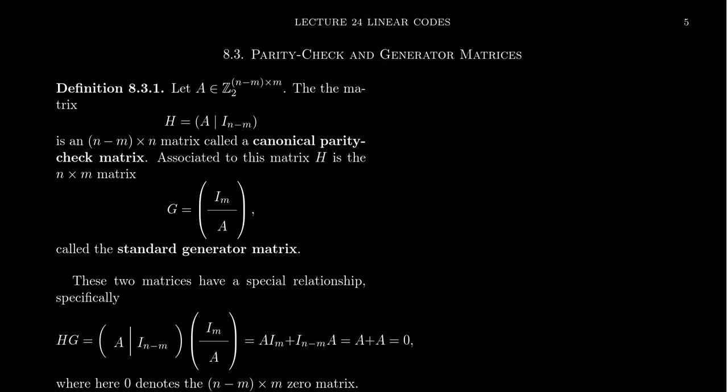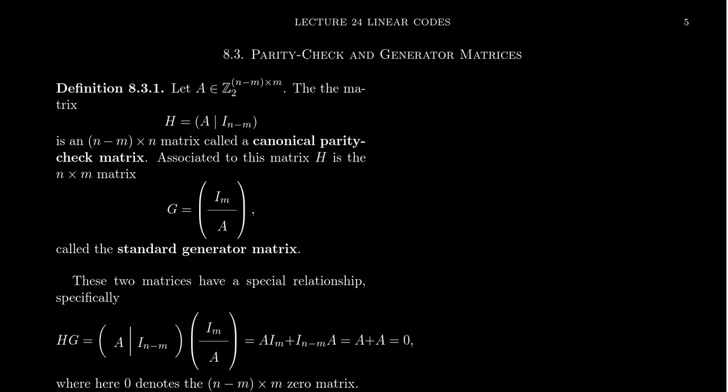We can use matrices to create linear codes where the code is the null space of a matrix. We have a lot of freedom in choosing the matrix A, so we want to pick it so that we can encode messages effectively with high efficacy for error detection and correction. Over the next couple of lectures we'll describe a simple encoding and decoding scheme that gives us one-error correction with very little effort.